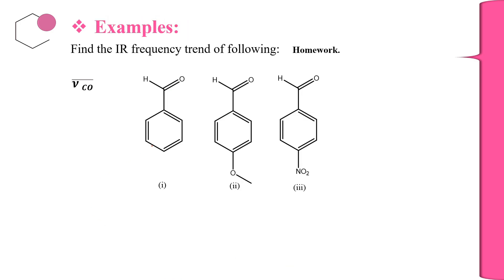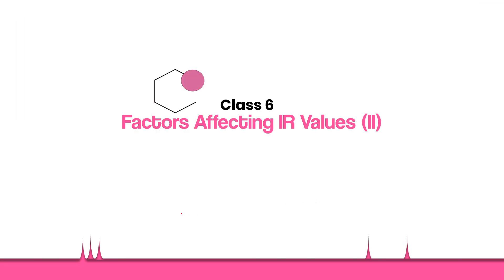Here is a practice example: find the ν̄(C=O) frequency value for the following compounds. Solve the question and write your answer in the comment section. With this we end this class — I hope you understood everything discussed. Do revise all the topics, and I have also put some questions in the community tab, so do solve those as well. Thank you for listening.